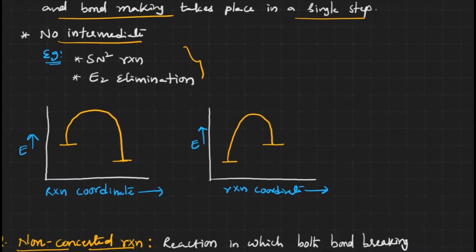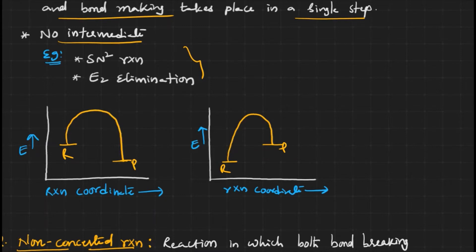Looking at the energy profile diagram: this is the reactant and this is the product. The entire transformation occurs in a single step — not through multiple steps, but a single step. That is why there are no intermediates; only a transition state is present.